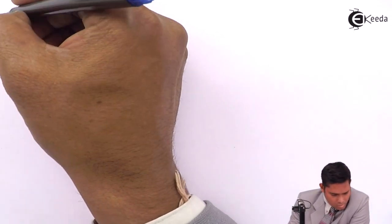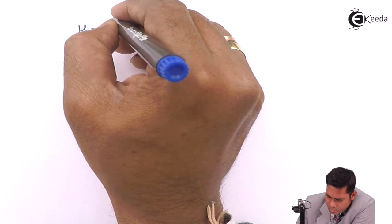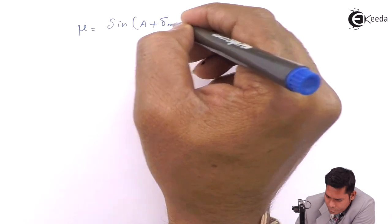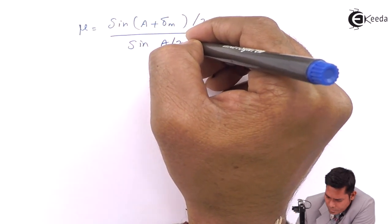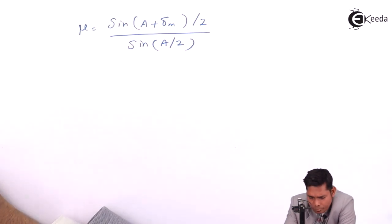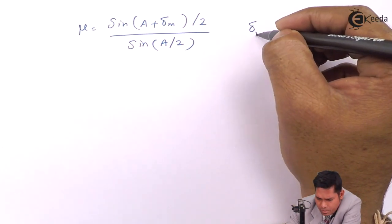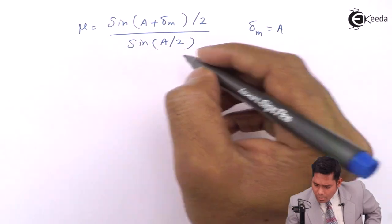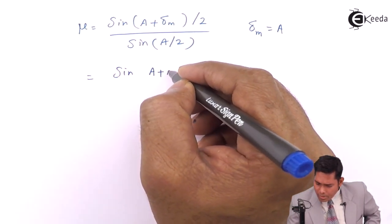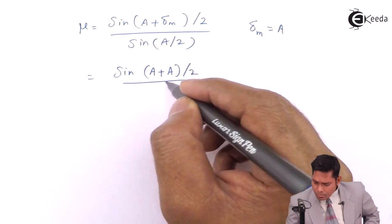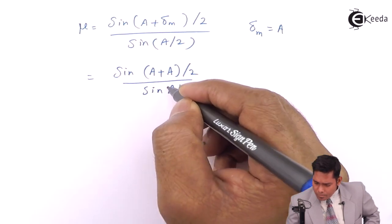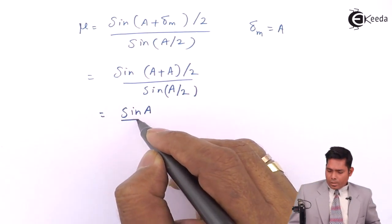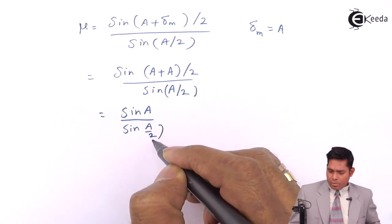We know that mu is equal to... Now, because delta M is A given in the problem, I put the value here. This is sine of A plus A divided by 2, this is 2A by 2, which is sine A, and this is sine of A by 2.